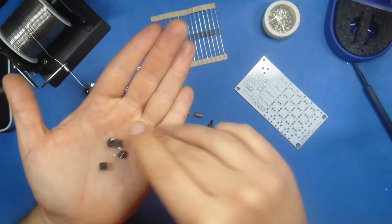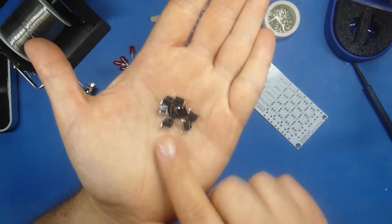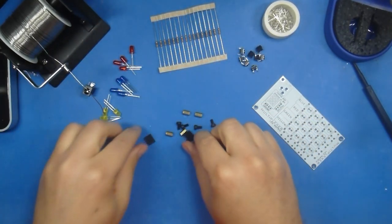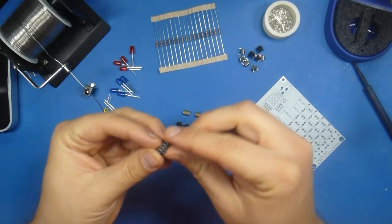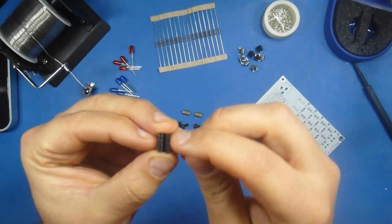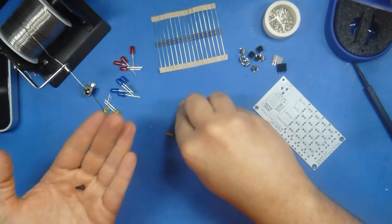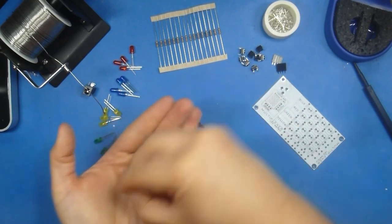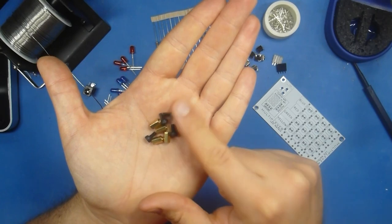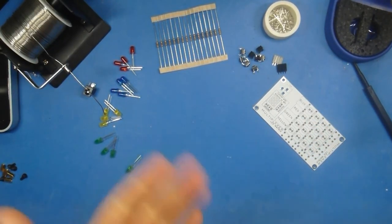Next, we're going to have eight different tact switches, or as they're more commonly known, push buttons. Gather those up. You'll have two four by one sets of headers, and then four different hex screws and hex standoffs. We're not going to need these until the very end, so we'll set those aside.